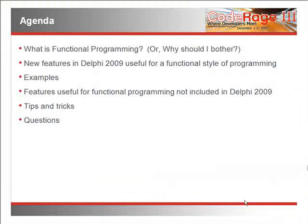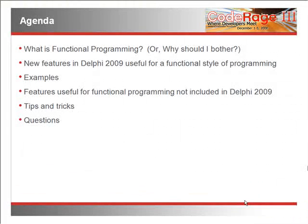I'm going to discuss what functional programming is and why it's worth bothering to learn. We'll cover some of the new features available in Delphi 2009 which are useful for a functional programming style. We'll have several examples of how you can use these features. We'll talk about some features that are useful for programming that you don't get in Delphi 2009. These may be features included in a future version of Delphi, and they're certainly worth knowing about since you might encounter them when you read up on functional programming elsewhere. And I'll cover some tips and tricks for getting past some of the hiccups in the implementation in Delphi.